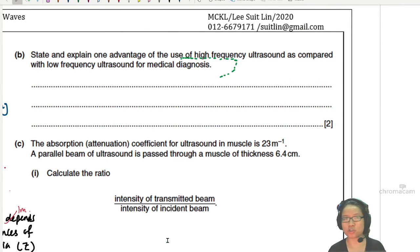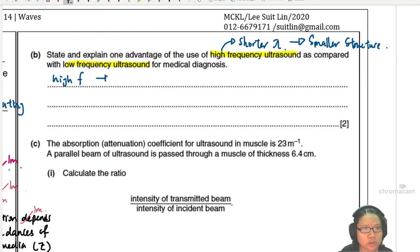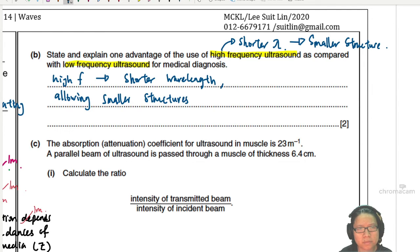For example, state and explain one advantage of the use of high-frequency ultrasound as compared to low-frequency ultrasound. The thing about high-frequency ultrasound - let's think about it. Remember, they have lower wavelength or shorter wavelength. So that would be my first point. Shorter wavelength means smaller structures can be detected. It shows that the ultrasound has a shorter wavelength. This is ON13, paper 41.